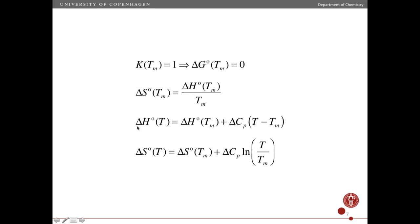If we then want to know delta H standard and delta S standard at other temperatures, then we use these equations. So we use the change in heat capacity that we got from our experiment and simply plug in the measured enthalpy change at the melting temperature, the melting temperature, and delta Cp. And then we can get it for any new temperature we want. And the same principle applies to the entropy. The equation is a little different.